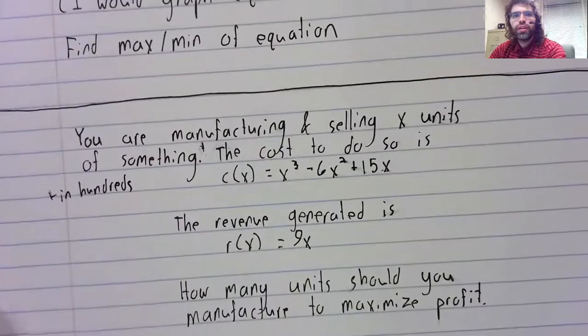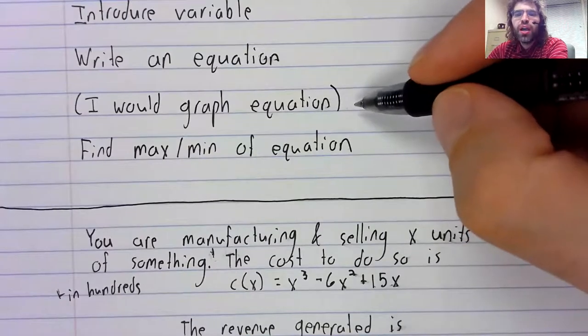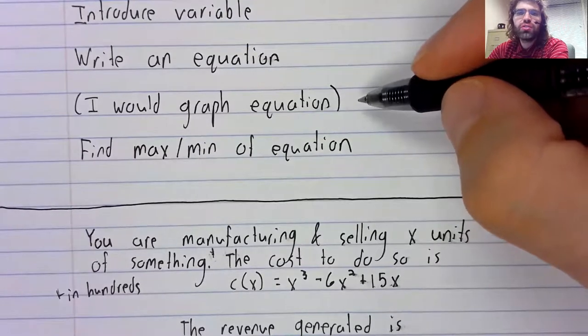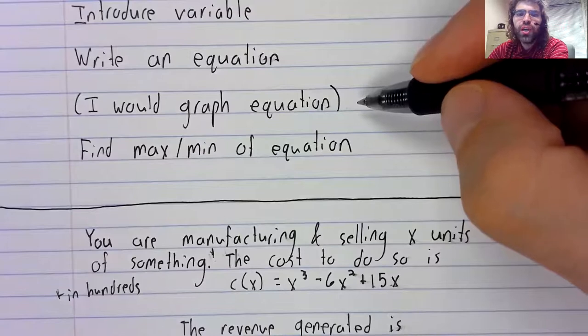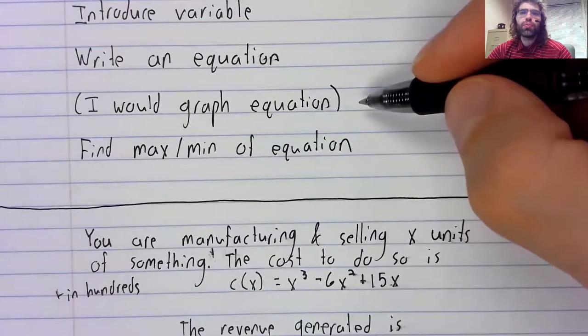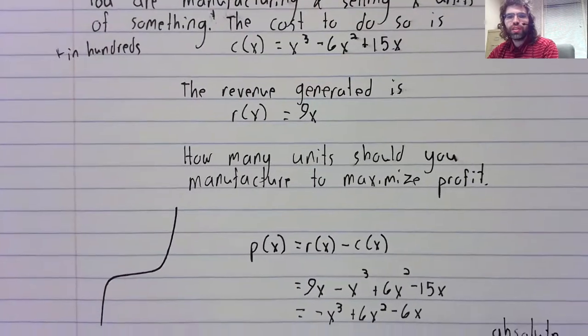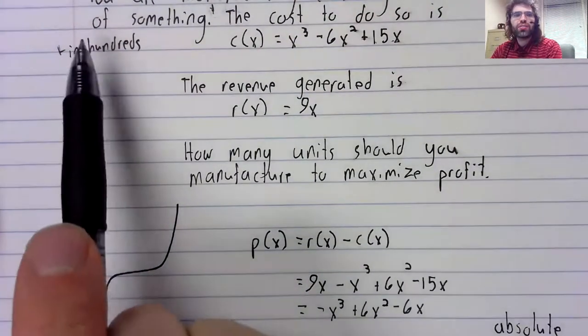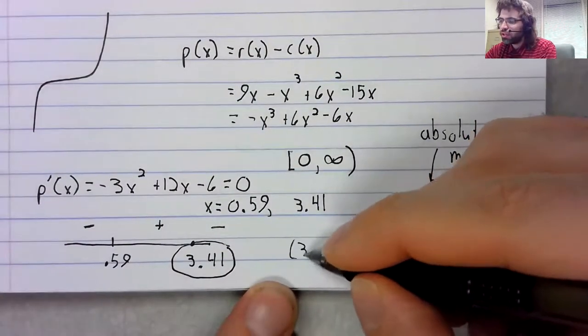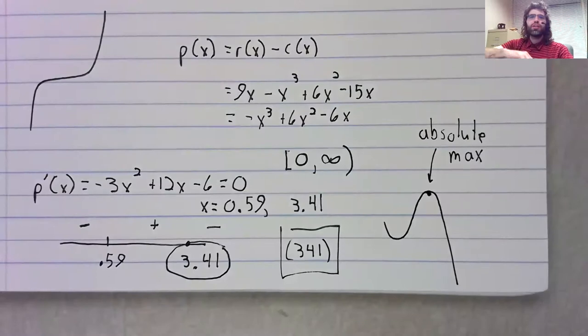So this step isn't in the book's guidelines. A lot of textbooks are really reticent about telling students to use technology. But personally, I think this step is invaluable. And also we have completed the problem. X is in hundreds. So 3.41 is 341 units.